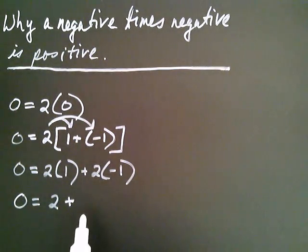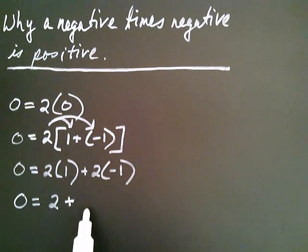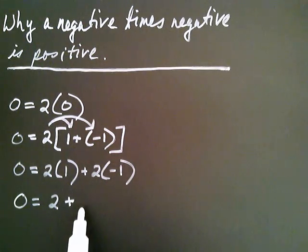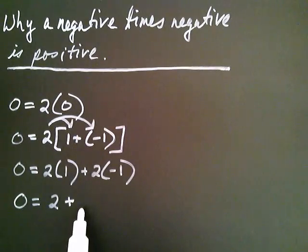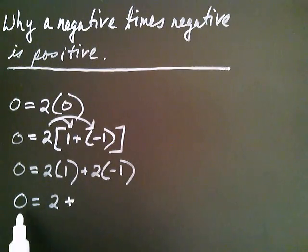If we think about that for a minute, it's asking: two plus what number gives zero? There's only one number such that when we add it to two we'll get zero, and that number is negative two. So two plus negative two is how we get zero.